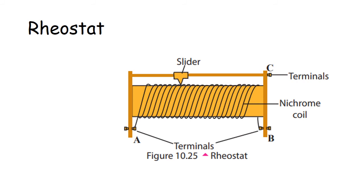The current with the necessary value can be obtained. A rheostat is connected to the circuit by the terminals A and C, or B and C. The necessary value of resistance can be adjusted by moving the slider.